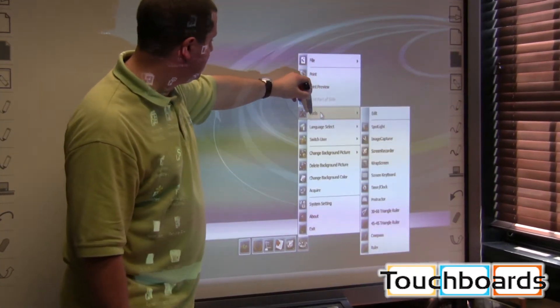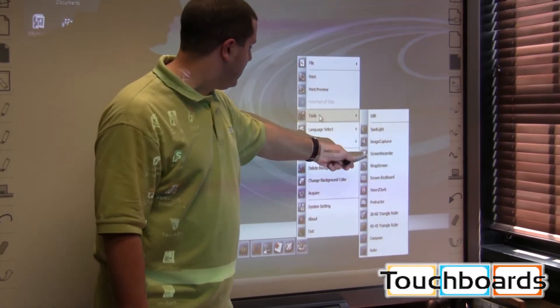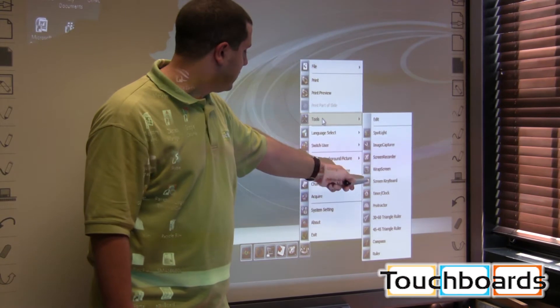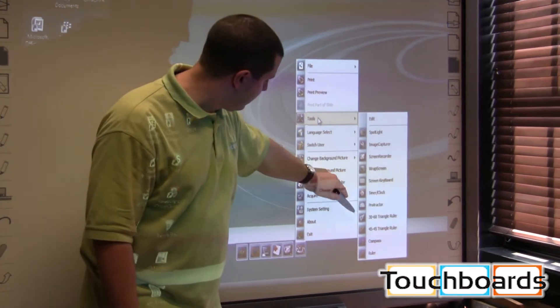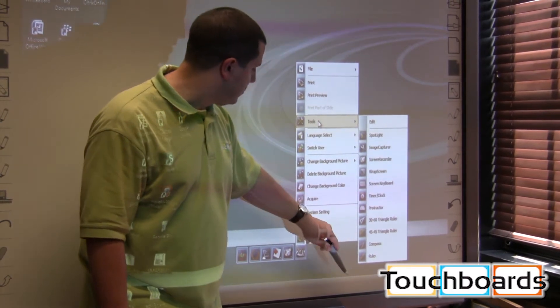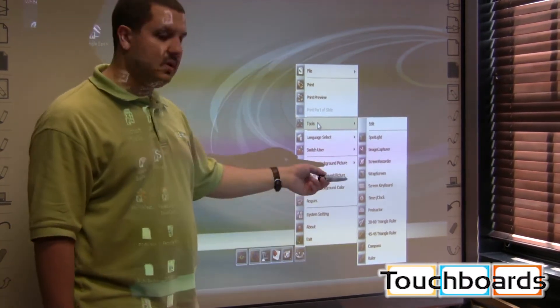You can print. We have tools here, including spotlight and a screen recorder and a keyboard, which we'll show you in a bit, including a few math tools. We've got a triangle ruler, a compass, a ruler, and a protractor, as well as a timer.